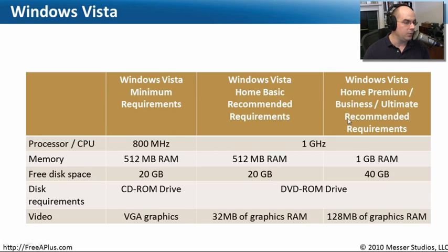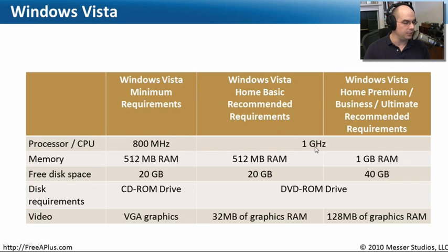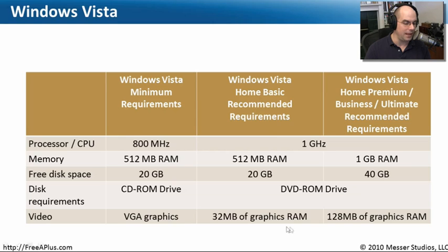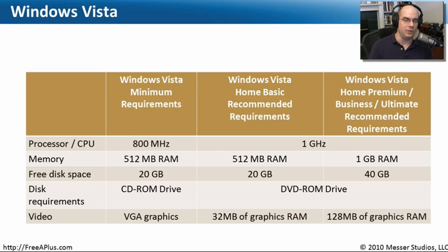Microsoft breaks these things down into minimum requirements and recommended requirements. While you could run Windows Vista with its minimum requirements, you're generally not going to be very happy with performance. The recommended requirements are a bit more substantial — a one gigahertz processor, at least one gigabyte of RAM for Windows Vista Home Premium, Business, and Ultimate, 20 gigabytes free on basic and 40 gigabytes free on the others, a DVD-ROM drive, and at least 32 megabytes of graphics memory — or 128 megabytes for higher-end versions. With Aero and the advanced UI capabilities, you'll be glad to have that extra power in your video card.